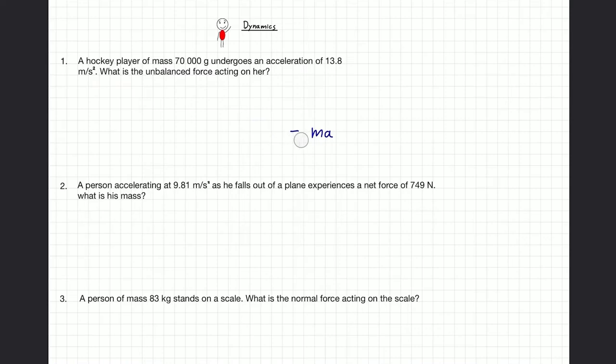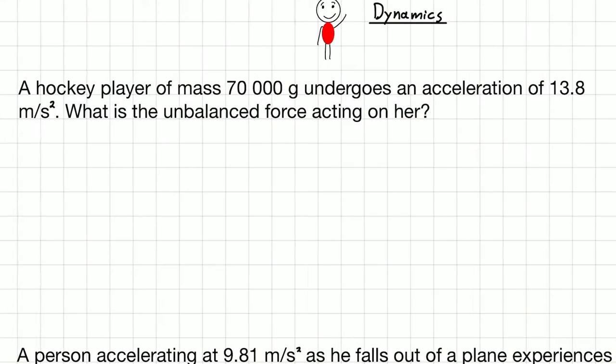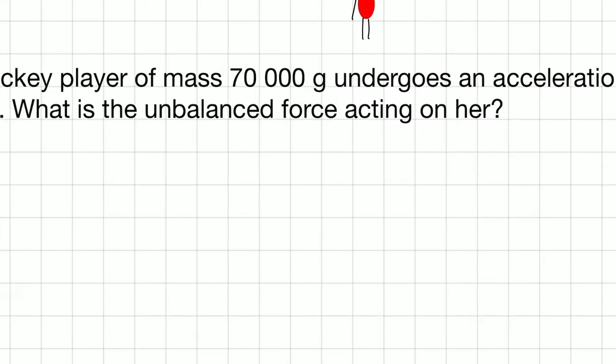Let's start doing these examples. The first one says, the hockey player of mass 70,000 grams undergoes an acceleration of 13.8 meters per second squared. What is the unbalanced force acting on her? When it asks for the unbalanced force, it's asking for the net force.